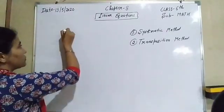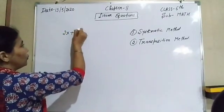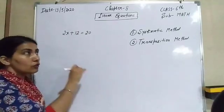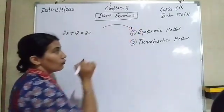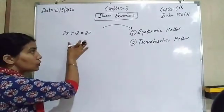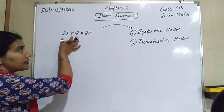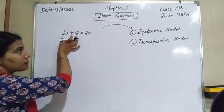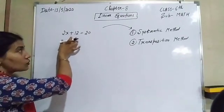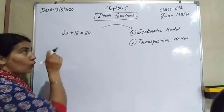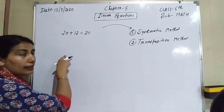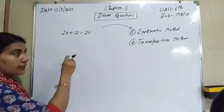For the systematic method, we have the linear equation 2x + 12 = 20. We have to solve this using the systematic method. To solve this, you need to look at the left-hand side — here we have 2x + 12 — and work toward having only the value of x on the left-hand side at the end.